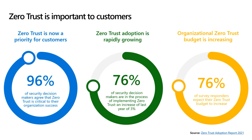Zero Trust is a security strategy that moves away from traditional perimeter-based security to a new model of explicit verification, least privileged access, and assuming breach. Implementing Zero Trust is a top security priority, and in our Zero Trust Adoption Report for 2021, we found that the majority of security decision-makers state that Zero Trust is critical to their organization's success. In the next couple of years, Zero Trust strategy is expected to remain a top security priority and organizations anticipate increasing their investment.